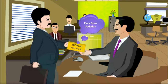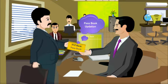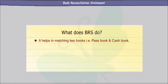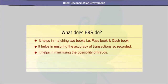Thus, in all these instances of mismatches, it is BRS that helps in figuring out those mismatches. Further, it also helps us in ensuring the accuracy of transactions so recorded. And lastly, BRS helps in minimizing the possibility of frauds. All these points indicate the major needs for preparing BRS.